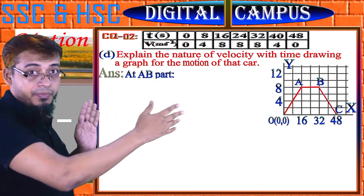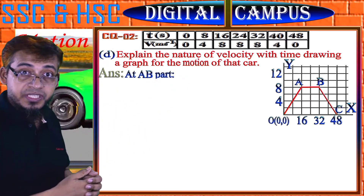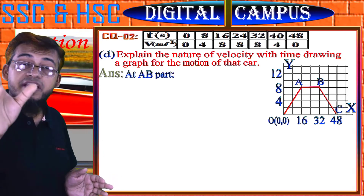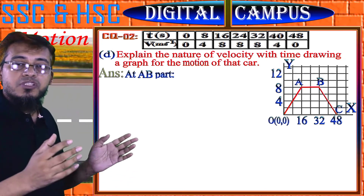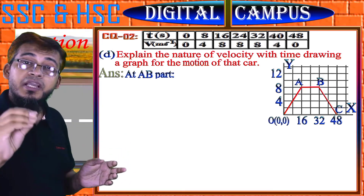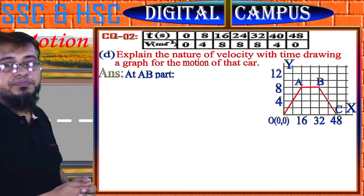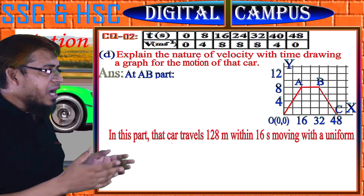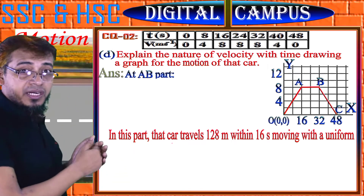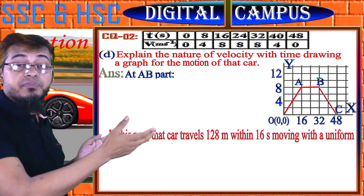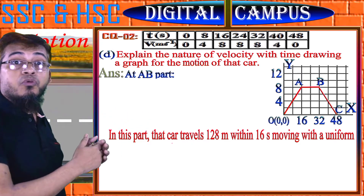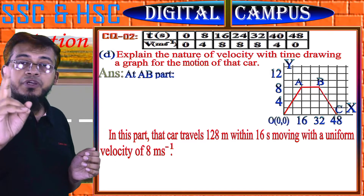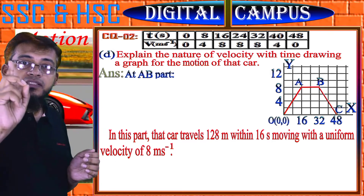Second case — AB part: The car was moving with uniform velocity of 8 m/s for 16 seconds. Therefore the car travelled a distance of 128 meter moving with uniform velocity of 8 m/s within those 16 seconds.